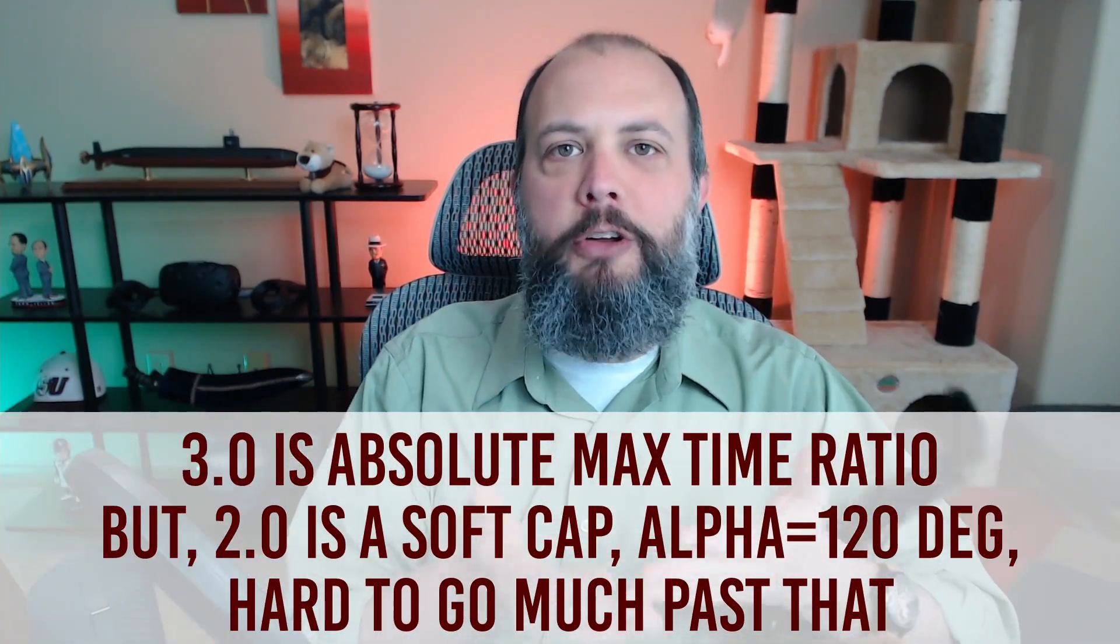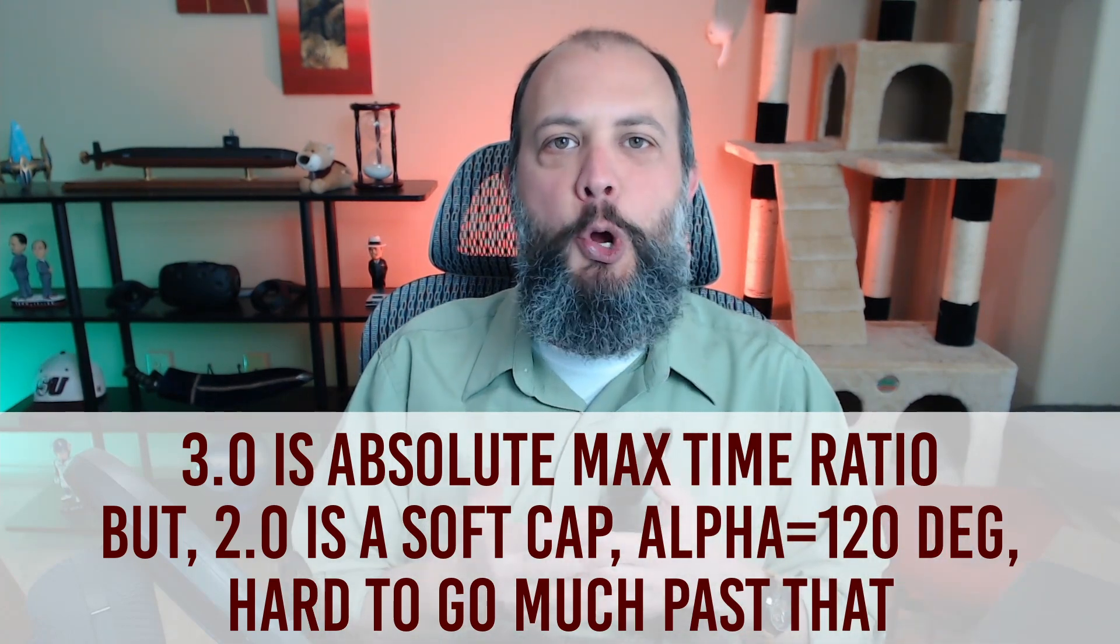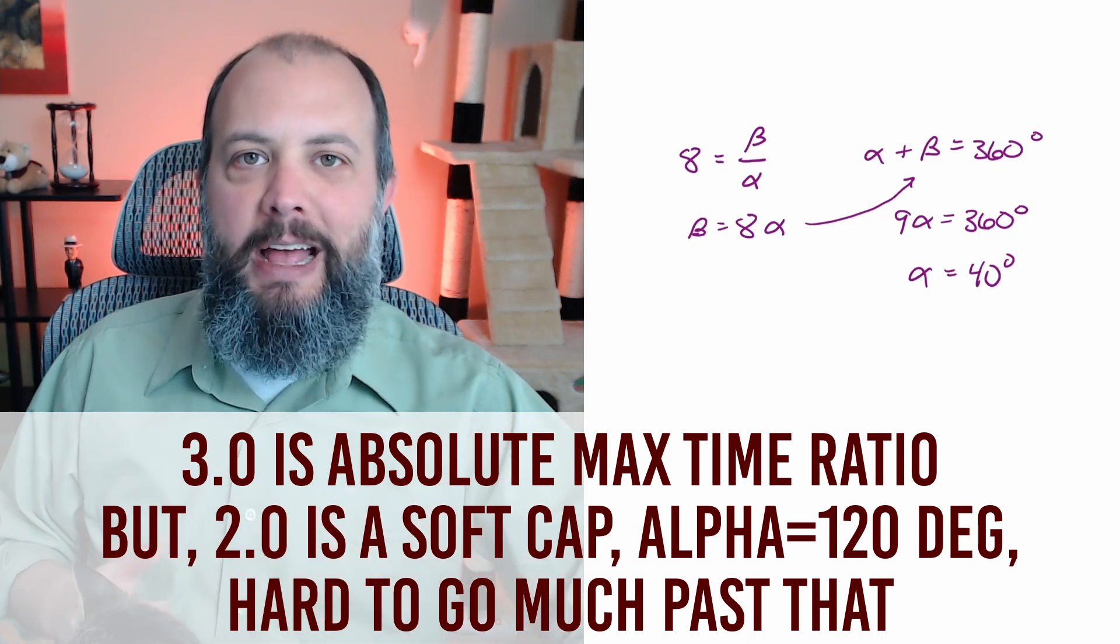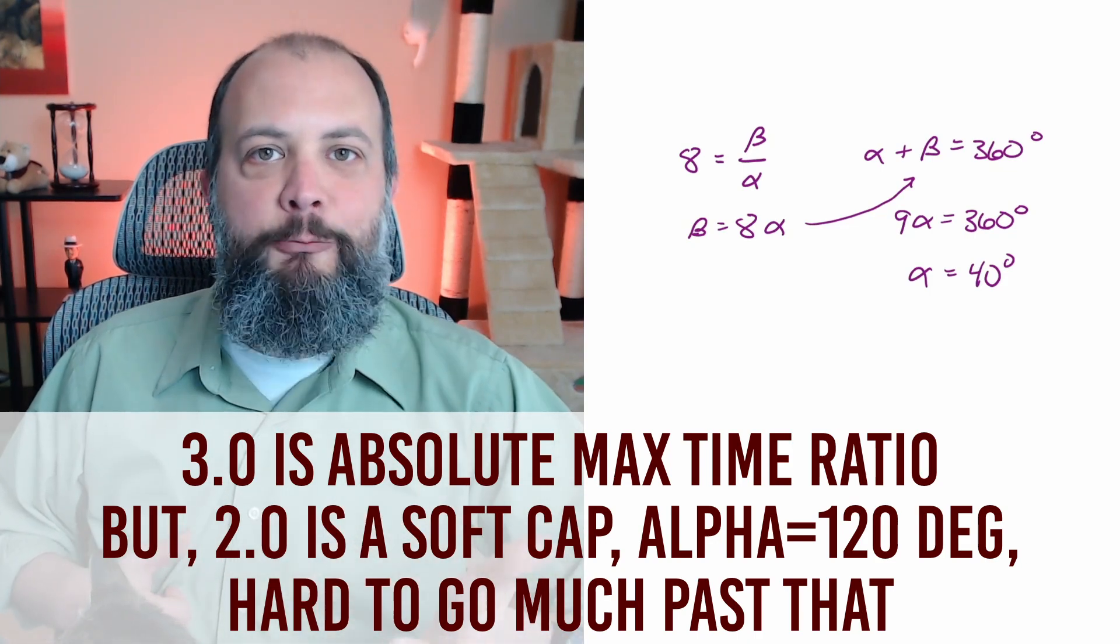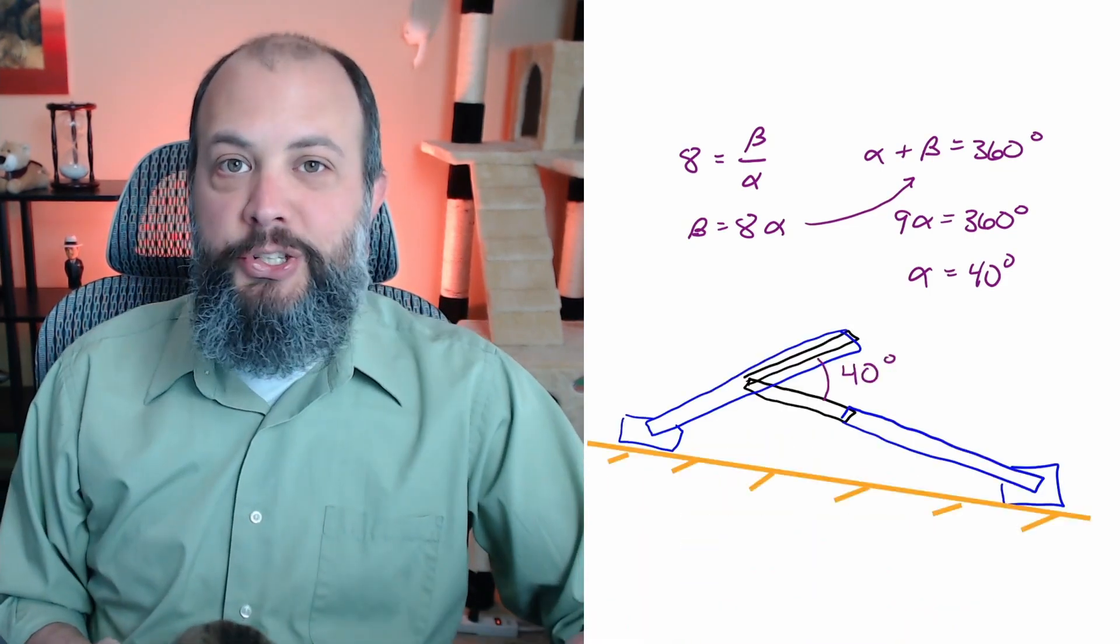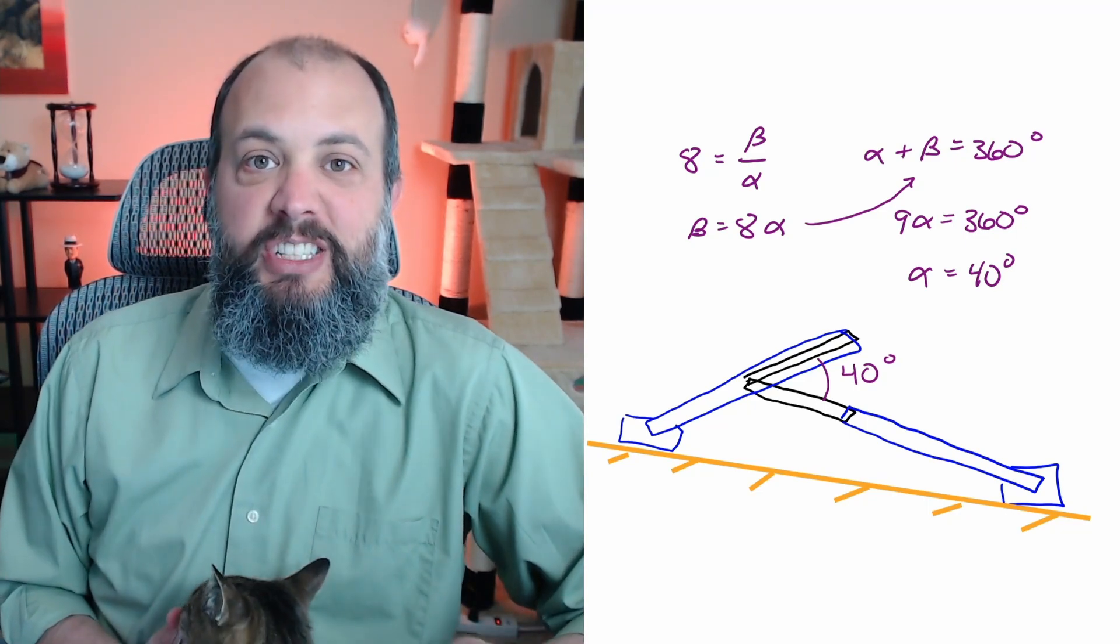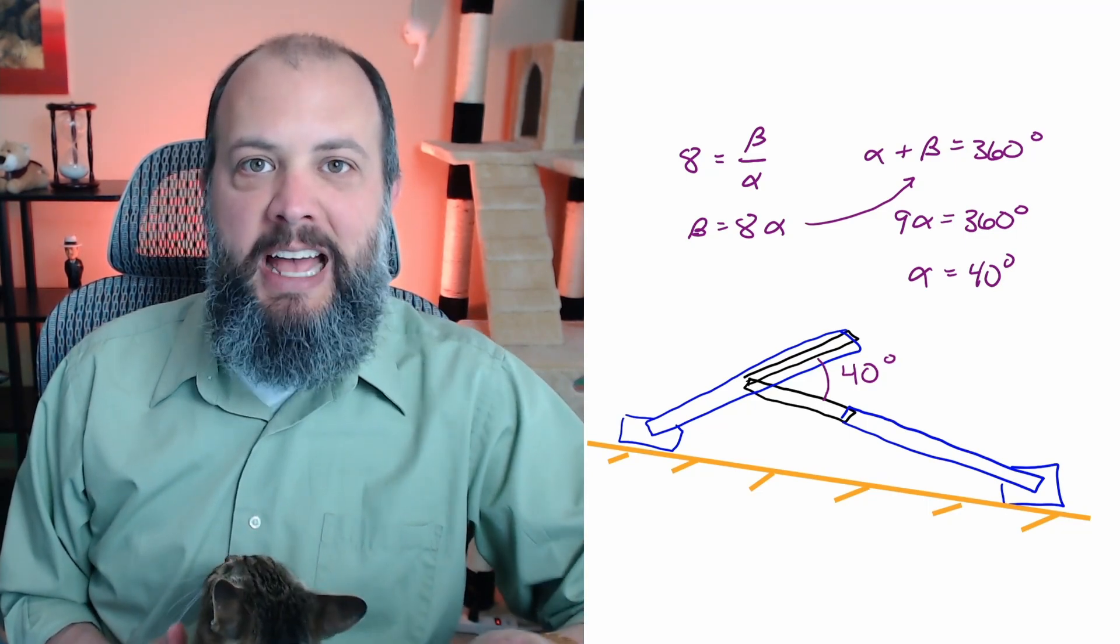Last demonstration is going to be what would happen if you wanted a really large time ratio. Say a time ratio of eight. We start off finding alpha and beta angles. You need an alpha angle of 40 degrees to achieve a time ratio of eight to one. And if we draw a picture of what this might look like with an angle of alpha of 40 degrees it seems like it should be possible to actually solve. Right?